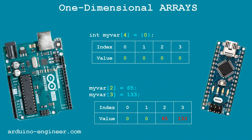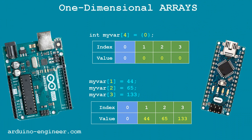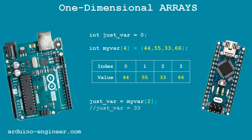After declaring an array, further in the program you can change the values of its cells by simple assignment as with a regular variable, but with an index in square brackets. The numbering of array indexes starts from zero, which is not always convenient. If you don't want to count elements from scratch, and the controller has enough free memory, you can create arrays with a dimension one more than necessary and start counting from the first index — the zero element simply won't be used. You can also read the values of array cells exactly like simple variables, but with the index in square brackets.